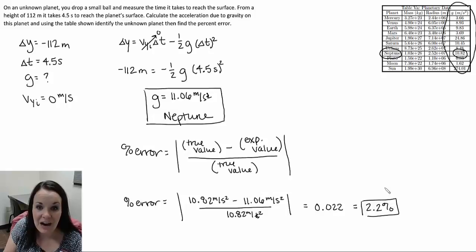This means we were pretty accurate in our problem. If we actually were on Neptune and stood on top of a 112 meter building and dropped that steel ball, it would take 4.5 seconds to reach the surface. We would have a pretty good estimate with an accuracy of about 2% of the acceleration due to gravity on Neptune.